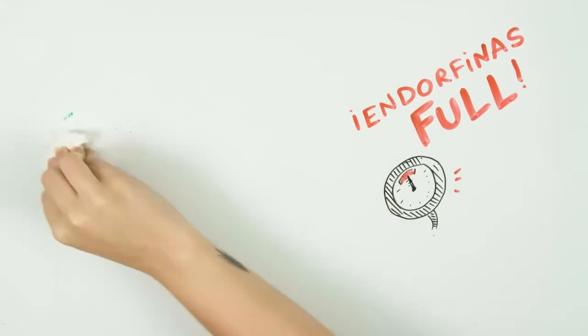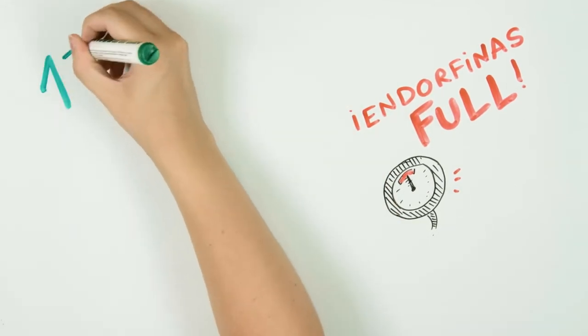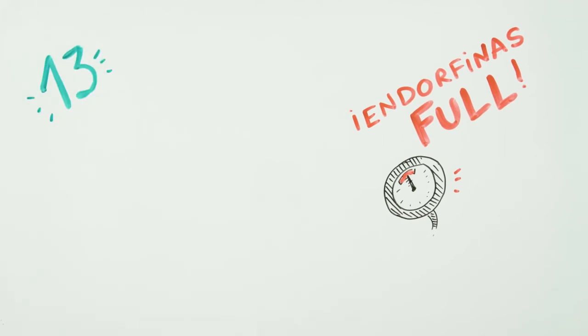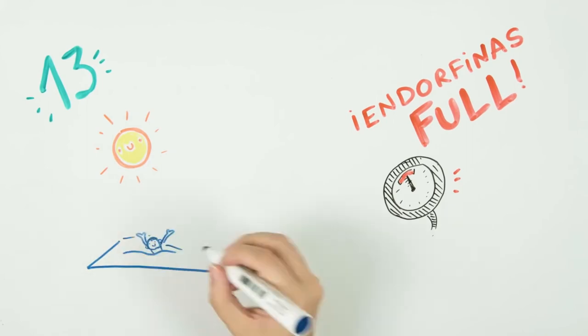Thirteenth: Since we are talking about endorphins, apart from laughter, another way to make your body generate them is through sports. Take advantage of the summer to do things outdoors and practice water sports. A few laps in the pool will not change your life, but it will fix the afternoon, assured.